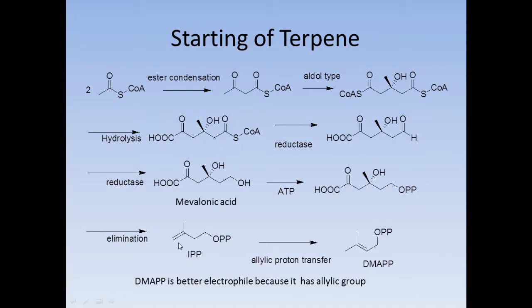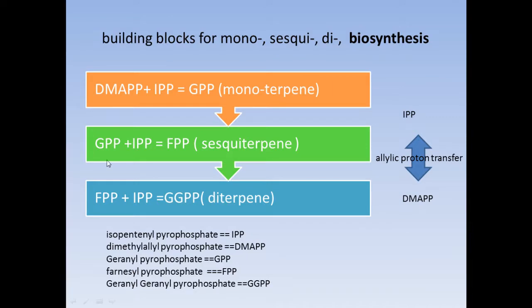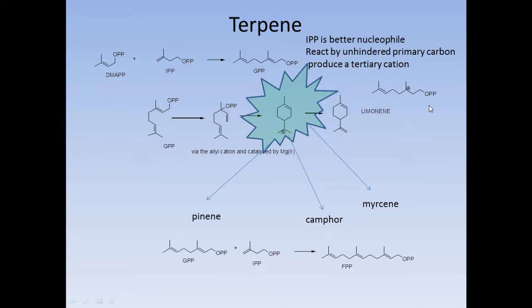This is produced by allylic proton transfer, where a hydrogen is transferred and a double bond is produced to give DMAPP. Further reaction: if this is the starting material, two molecules give the monoterpene precursor GPP (geranyl pyrophosphate). IPP interconverts with DMAPP via allylic proton transfer. Then GPP reacts further with IPP to give FPP, the precursor for sesquiterpenes, and FPP plus IPP gives the diterpene with the geranylgeranyl pyrophosphate molecules. This is the roadmap of terpene synthesis.